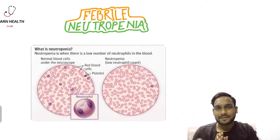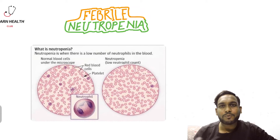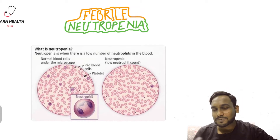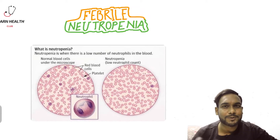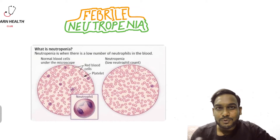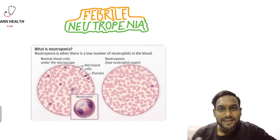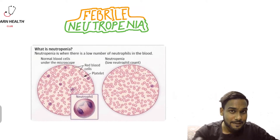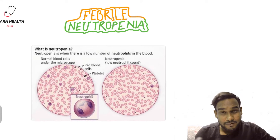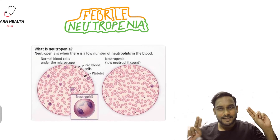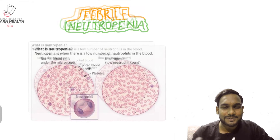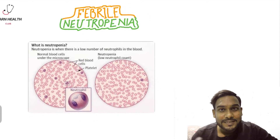Hello friends, welcome back. In the last chapter we discussed about hospital care-to-infection in the PICO. In this tutorial we will be discussing about febrile neutropenia in children. As in the last class, we will go step by step from definition, risk factors, etiology, and finally the protocol. So let's start.